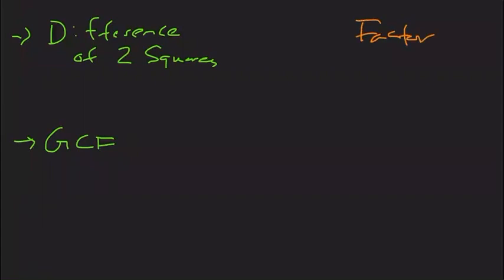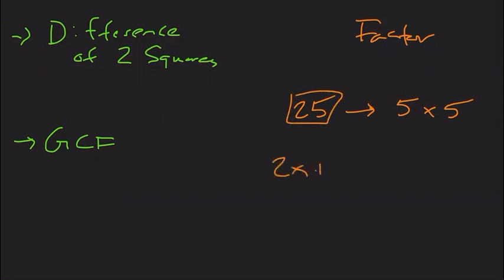The word factor means things being multiplied, and when we do factoring as a verb — when we factor something — we're breaking it apart into the pieces that are being multiplied. So like you could say that taking 25, you could factor that into 5 times 5. With difference of two squares and GCF, it'll look more complicated — we're breaking down something like 2x plus 10, or x squared minus 16. How can we break these apart into things being multiplied? That's what factoring is.